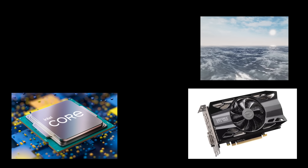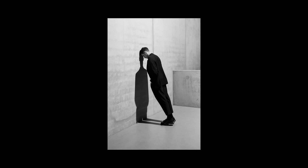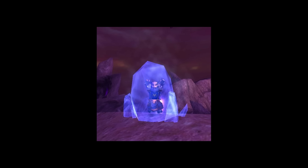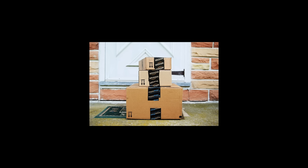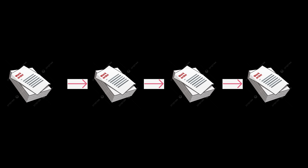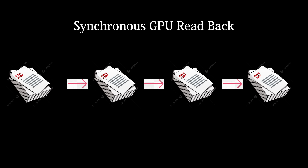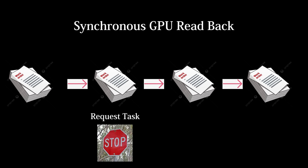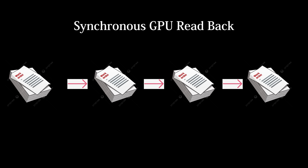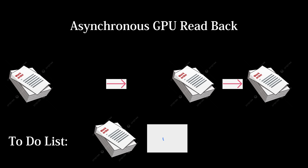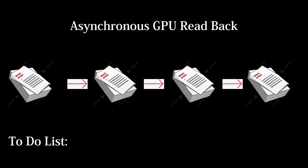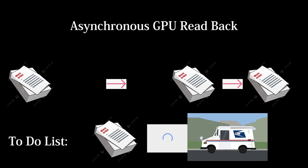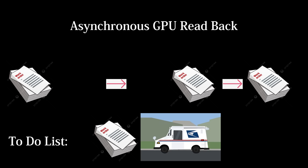The problem isn't exactly reading back the data — it's waiting for the data. It's sort of like if you ordered an Amazon package, and after clicking the submit order button, you were frozen and could not do anything until the package arrived at your door. This would be known as a synchronous GPU readback request, in which we hold everything until the data is ready. But we can also do an asynchronous request, in which the game continues going like nothing happened. Once the data has arrived, we can do what we need with it and stand by until the next GPU data package comes around.